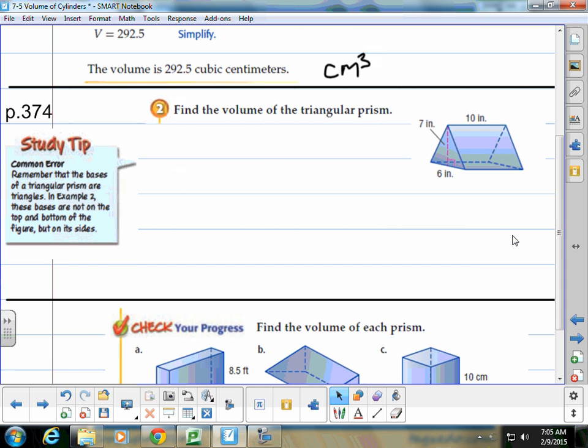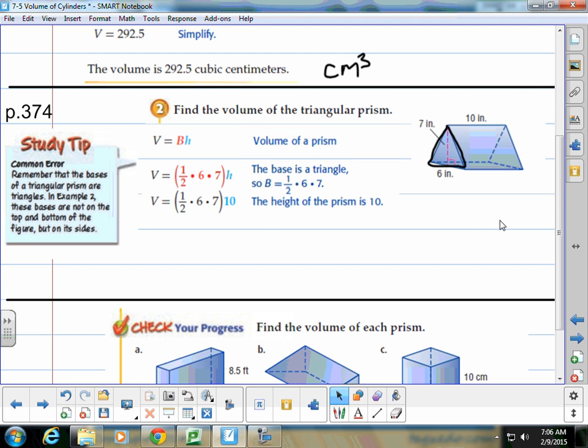So on page 374, there's an example of a triangular prism. Remember, the bases of a triangular prism are triangles. This part is our base. So our formula is base times height, when the base is actually the area of that side. So we do the area of that triangle with a base of 6 and a height of 7. Then we multiply times the height, which is 10. So then we get 210. So that means that the volume is 210 cubic inches.